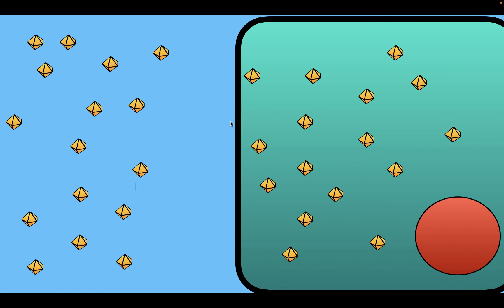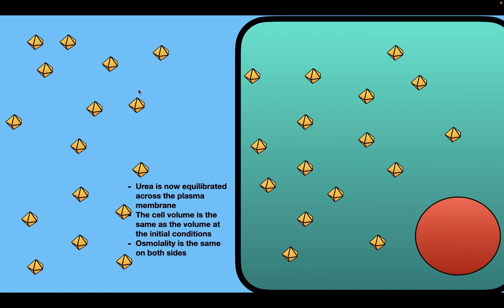Therefore, the osmolality in both the cell and the solution is going to be the same. The cell volume expands back to the volume it had at the initial condition, and the urea is now equilibrated across the plasma membrane. So after adding urea into the solution, the urea will equilibrate across the cell membrane, the cell volume will remain the same, and the osmolality will be equal on both sides of the membrane — the same inside and outside.